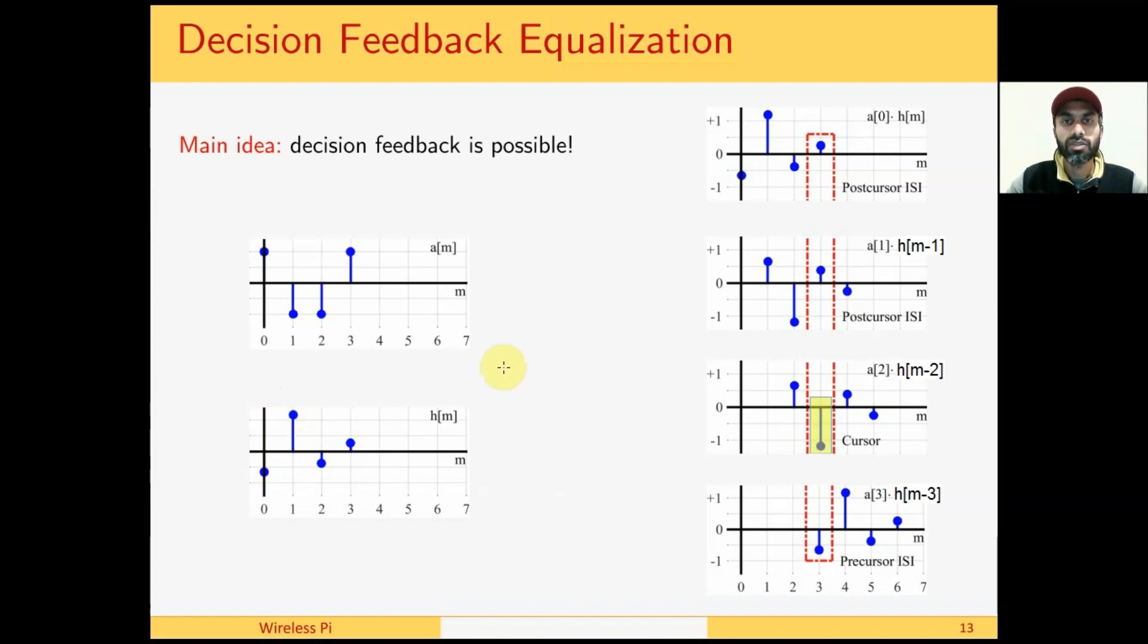The signal at the input of the equalizer is given by the convolution of these two sequences. We employ the intuitive method of convolution to find the output. At the first step, we can see that h(m) is multiplied by a(0); h(m-1) should have a(m-1); h(m-2)